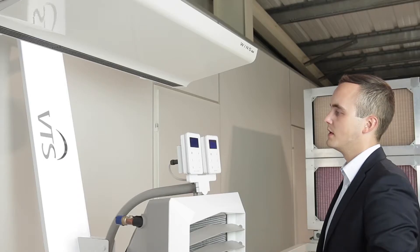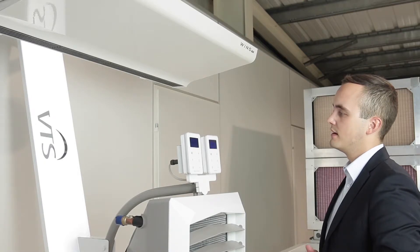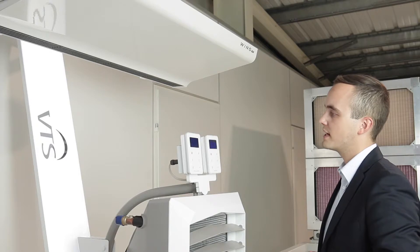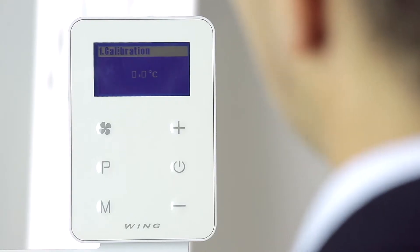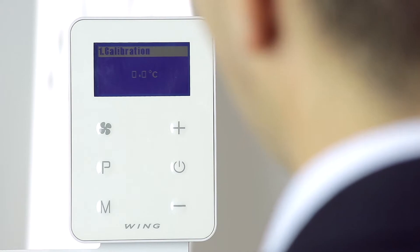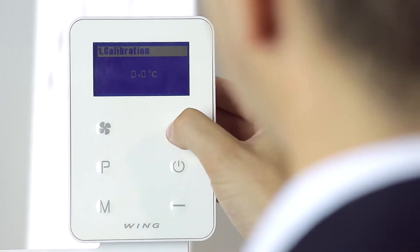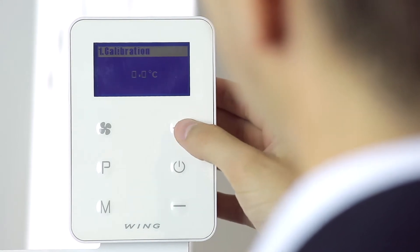The first function of the advanced programming settings is the function of calibrating the temperature of the sensor. If the room temperature is different than the one indicated by the Wing EC controller, we can calibrate the sensor plus or minus eight increments of half a degree Celsius.